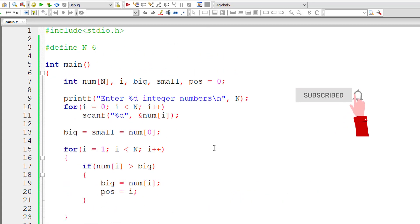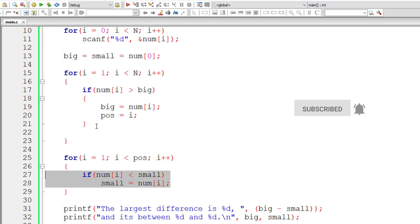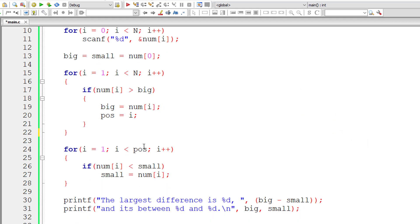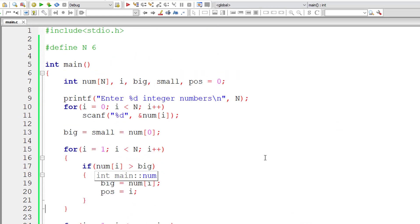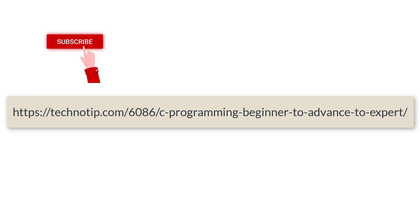We can eliminate some steps by directly initializing the array variable with integer numbers, and we could combine the second for loop's logic inside the first for loop somehow. But this works. This is how we find the largest difference between any two numbers in an array, considering the condition that the largest element should appear after the smallest element. Please visit the link in the description for source code, notes, and discussion.